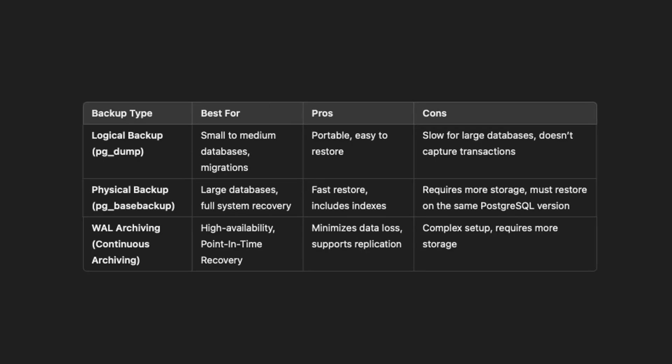The second type of backup is a physical backup — a direct copy of the database files at the operating system level. You capture everything, including indexes and transaction logs. For that we have the pg_basebackup tool to copy the entire database directory. We require file system level access, and this is best suited for large databases and replication setups. It supports point-in-time recovery (PITR), which can restore data up to a specific moment.